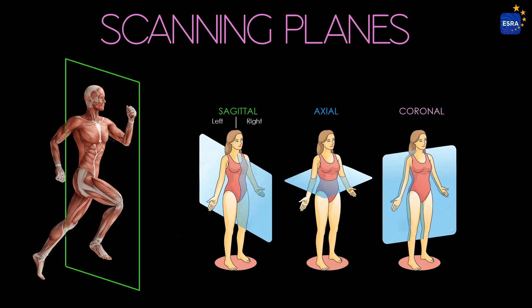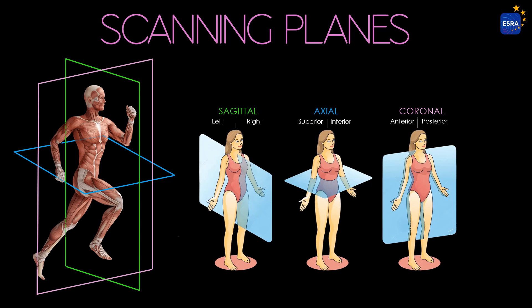The transverse plane, also known as the axial or horizontal plane, is parallel to the ground and divides the body into superior and inferior sections. The coronal plane, also referred to as the frontal plane, is a vertical plane perpendicular to the ground and at a right angle to the sagittal plane, dividing the body into anterior and posterior sections.